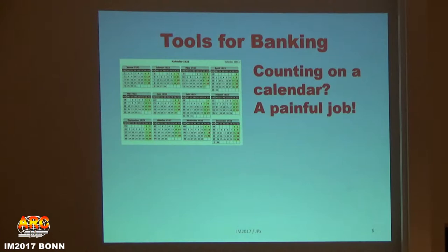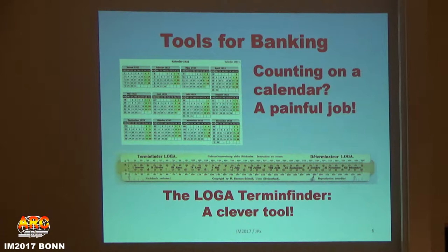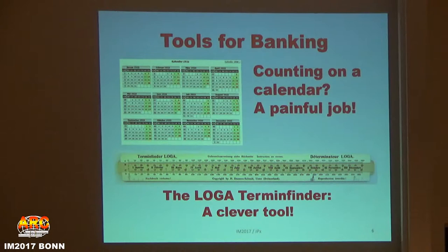Are there solutions? Yes. The Swiss are famous. LOGA had the solution — the LOGA Terminfinder. And if you look carefully at this picture, you will see that there are four scales. It's in the form of a slide rule, but it has four scales, and you have here 360 days. This is for the banks who count every month, even February, as a 30-day month. And you have a second pair of scales with 365 days, for the banks who count the year as 365 days. These are already two different methods for calculating the interest days.